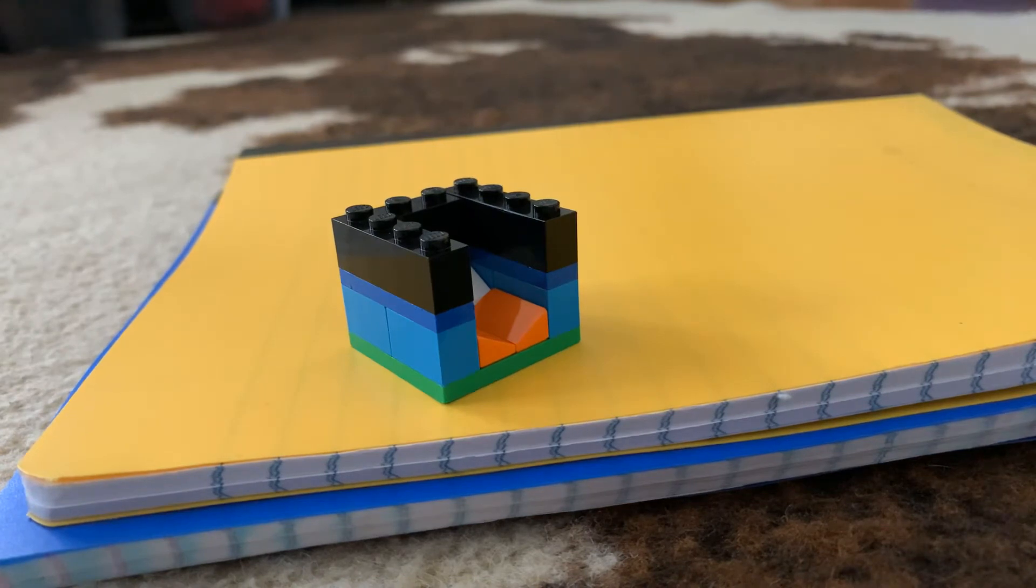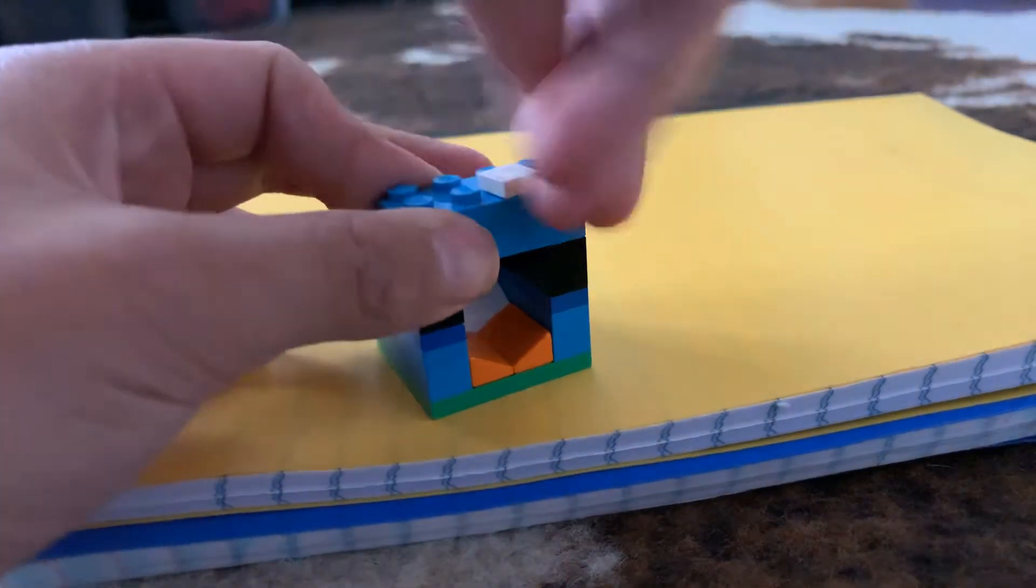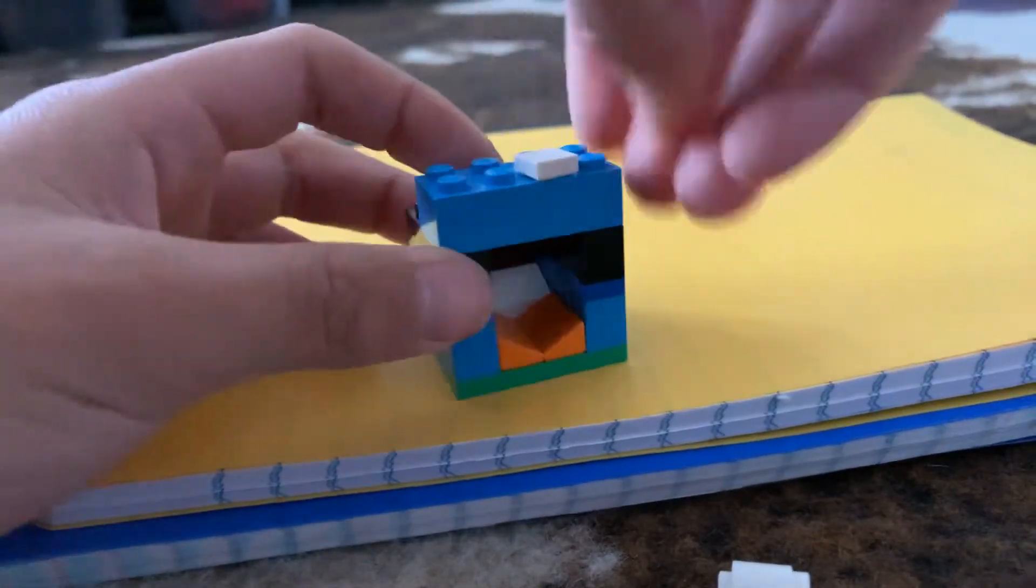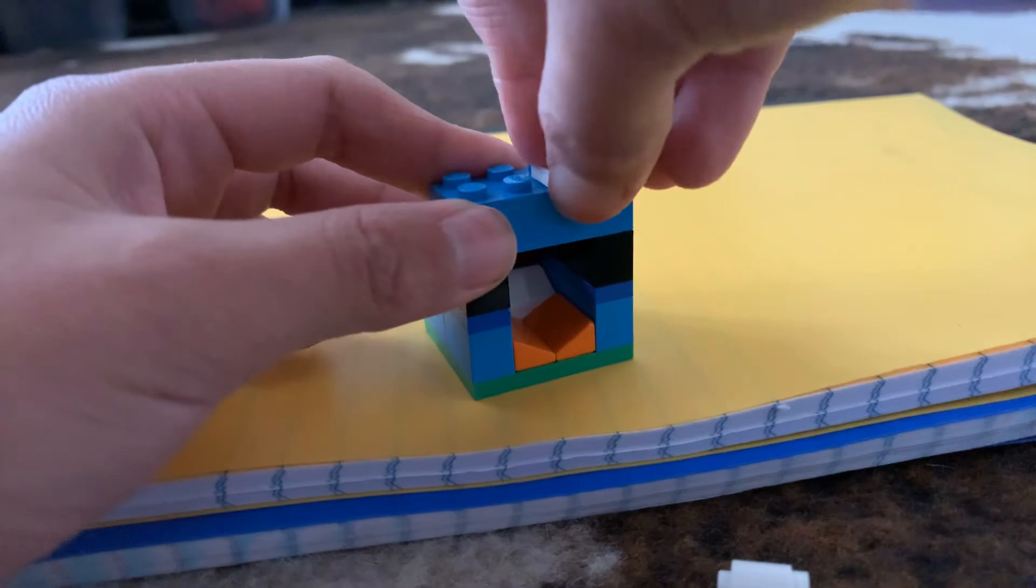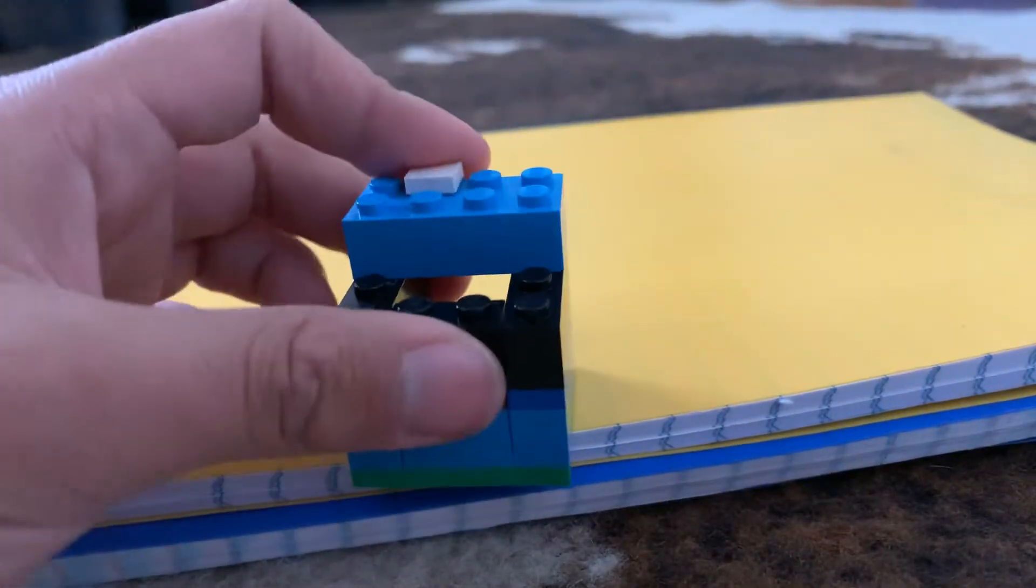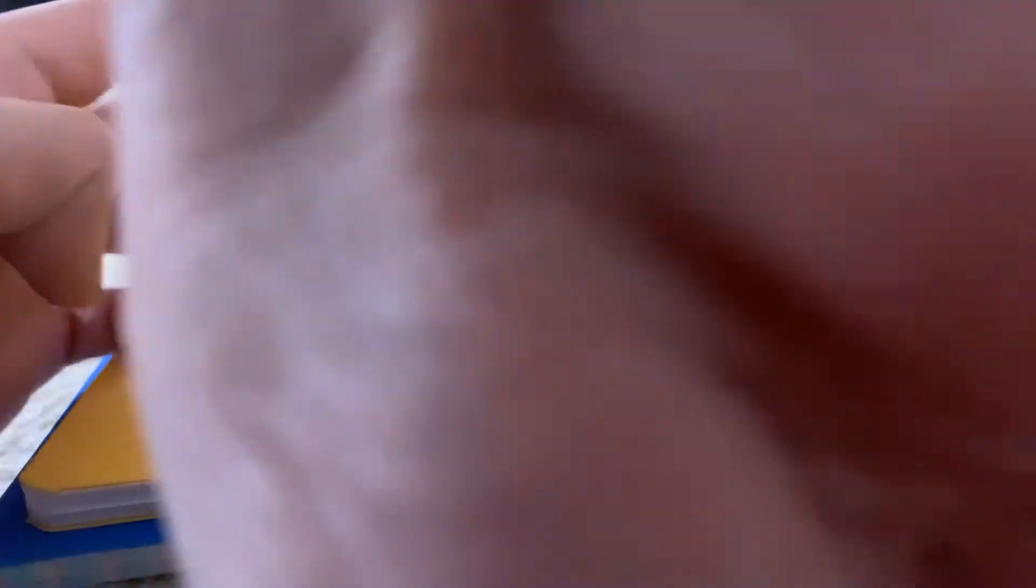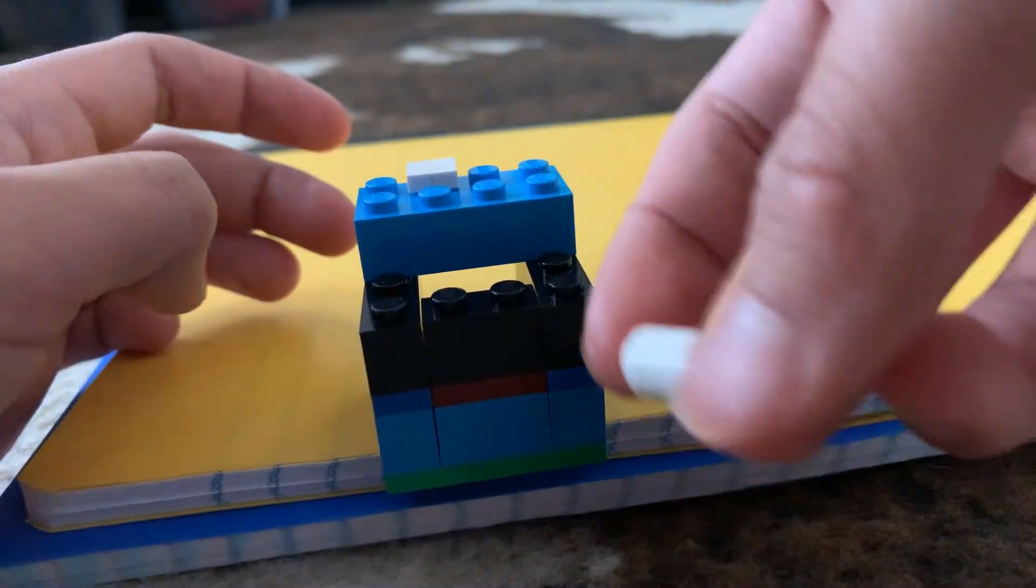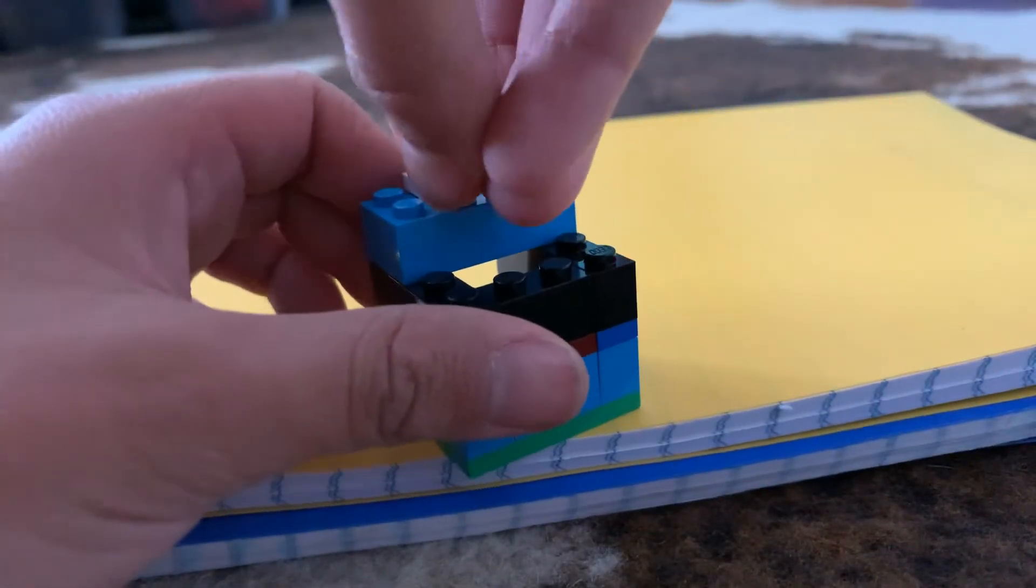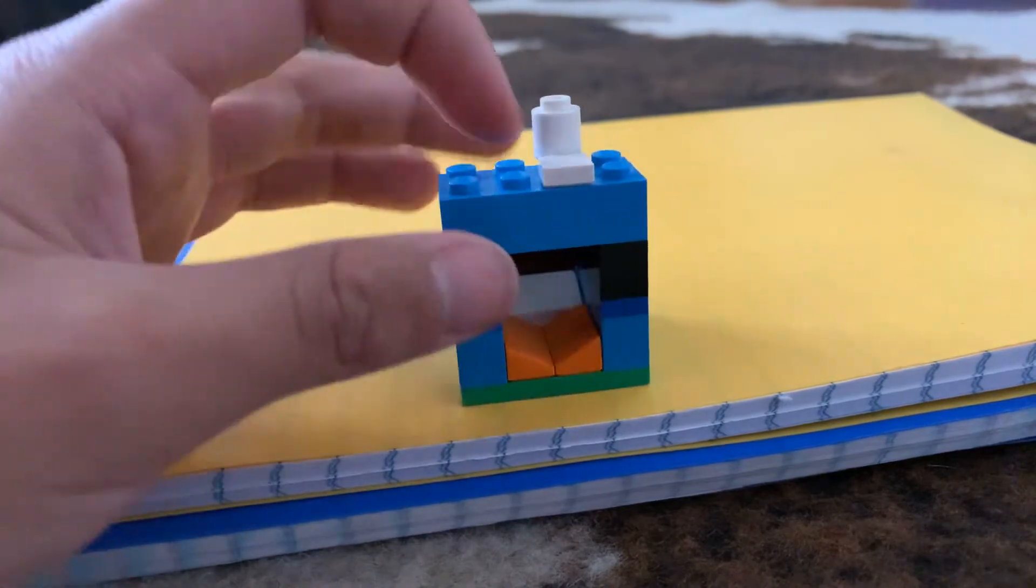So next, you will be taking a 1x4 with the 1x1 on it, and you're going to put like a little soda thing. Put it right behind there. So now you have this.